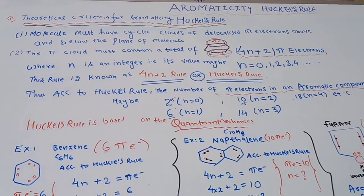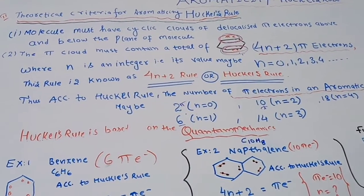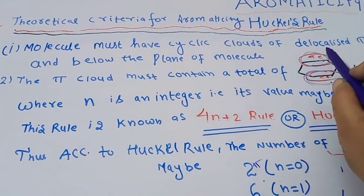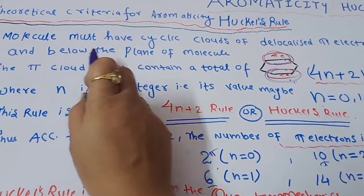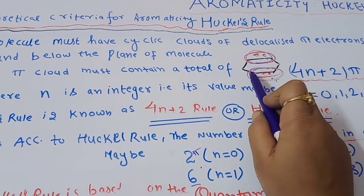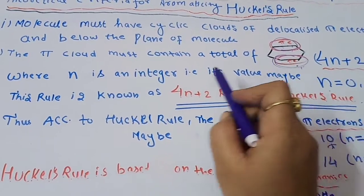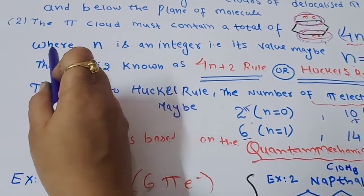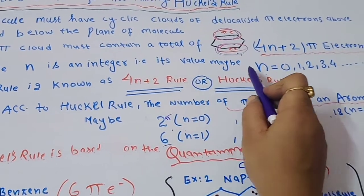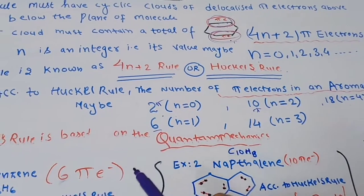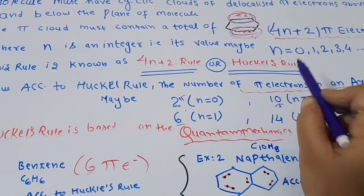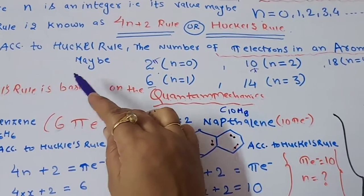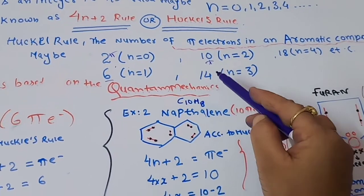Now let us see the theoretical criteria for aromaticity — that is Huckel's rule. From a theoretical standpoint, the molecule must have cyclic clouds of delocalized pi electrons above and below the plane of the molecule. The pi cloud must contain a total of 4n+2 pi electrons, where n is an integer with values 0, 1, 2, 3, 4, etc. This rule is known as the 4n+2 rule or Huckel's rule. Thus, the number of pi electrons in an aromatic compound may be 2, 6, 10, 14, or 18.